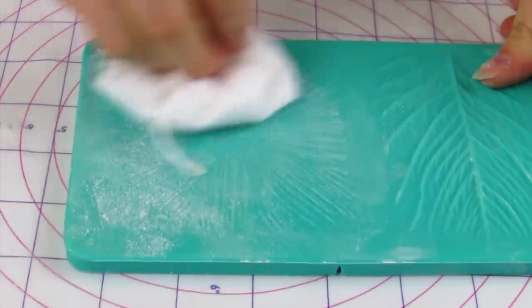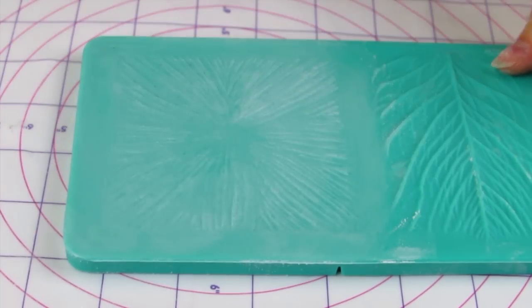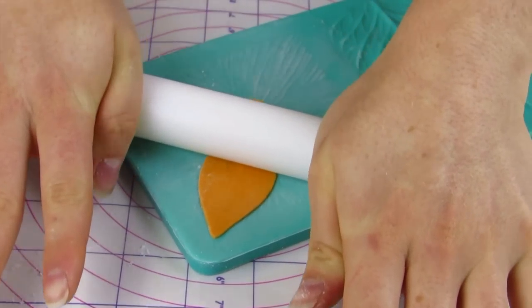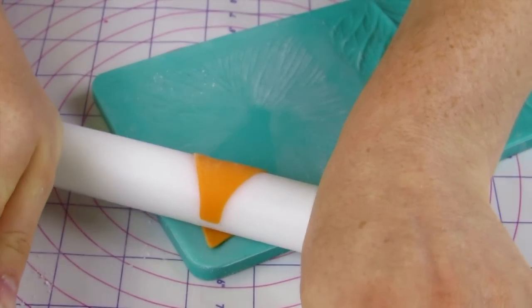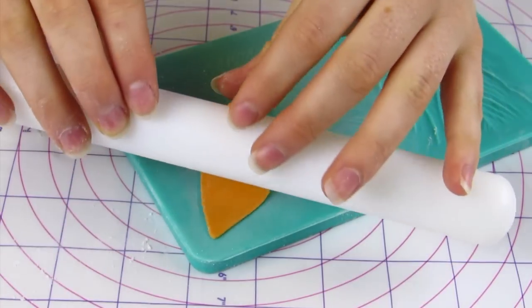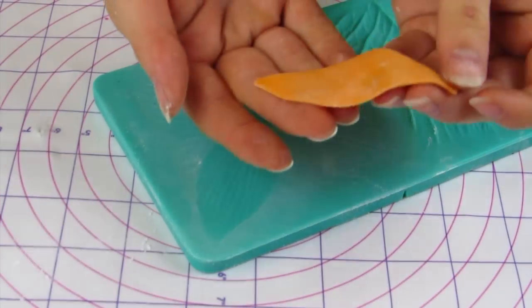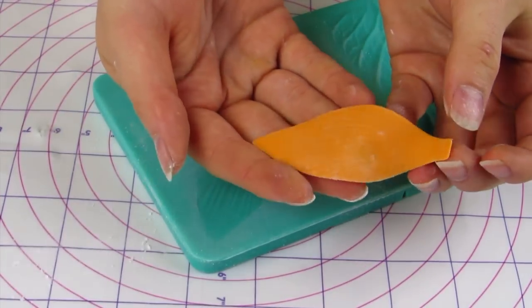And you want to put those under a piece of plastic so that way they don't dry out. And I also have this lily kind of texture mat that I'm going to use just to give my lily a little extra texture on it. So the petals look kind of nice and pretty.